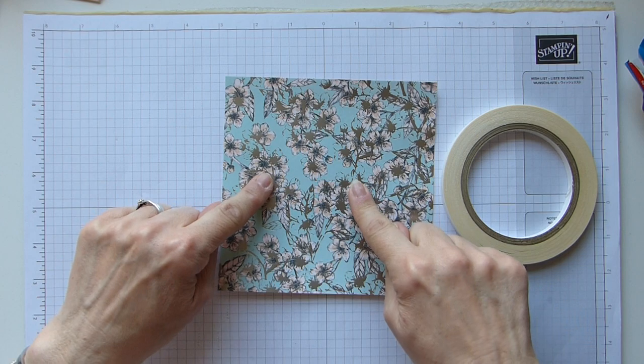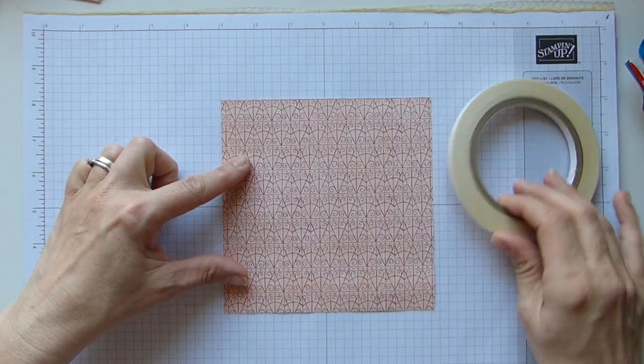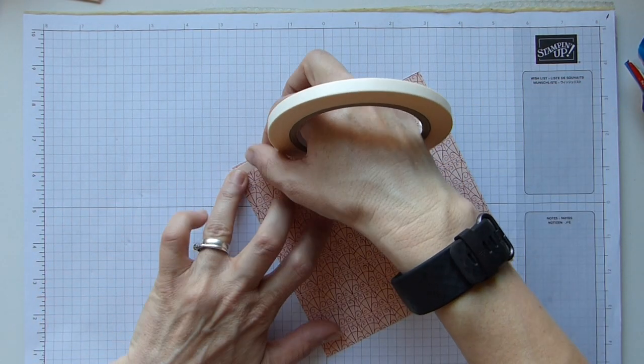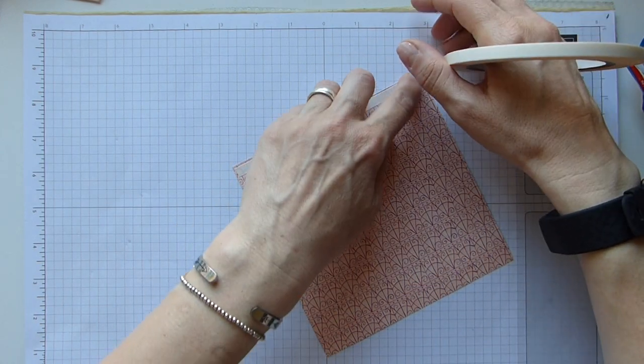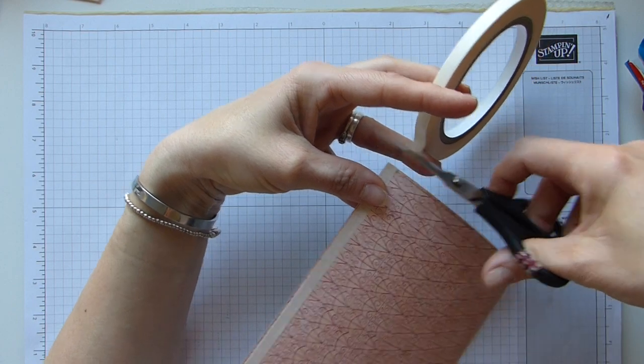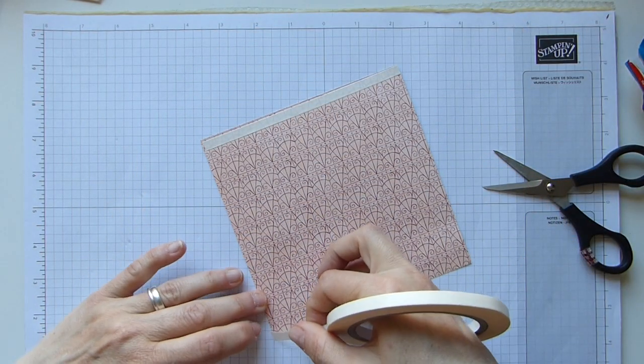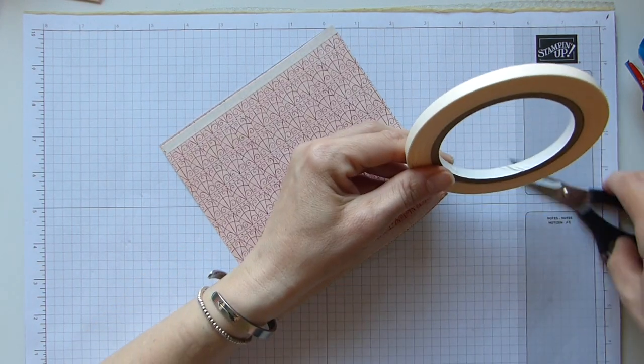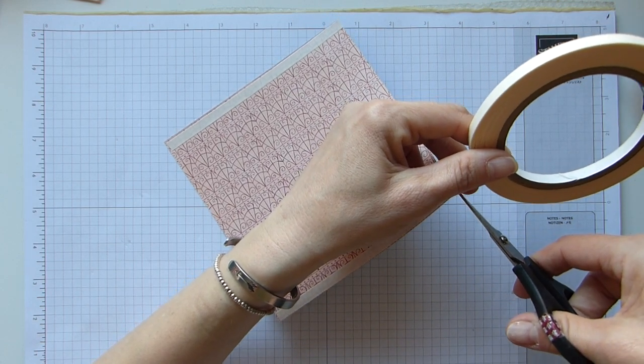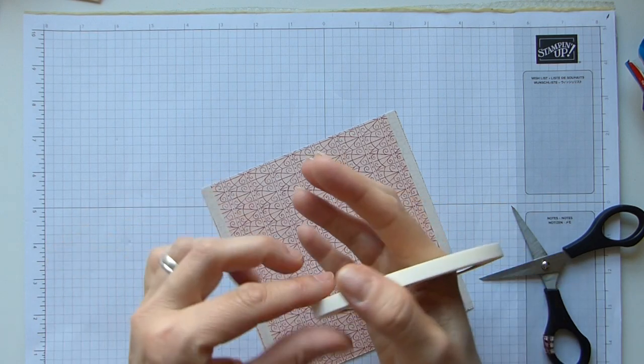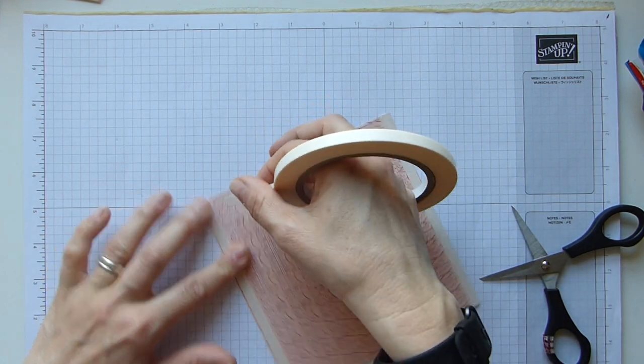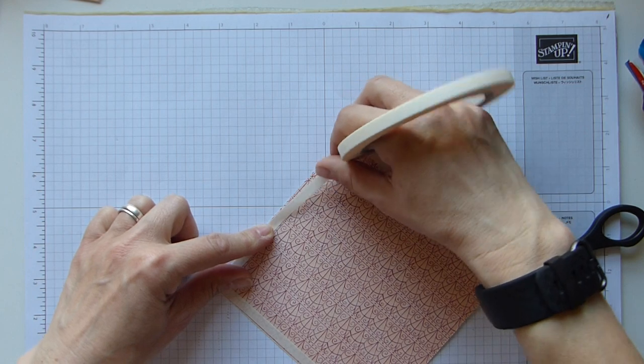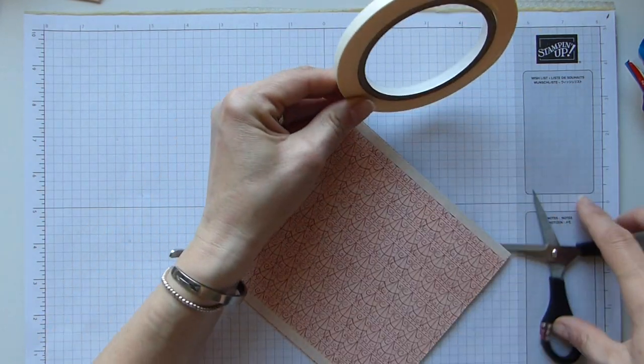If you have a pattern that you want to go a certain way, you'll need to pay attention to which way you do this. This is the side I want showing. On the opposite side, I'm going to pop some tear and tape all the way along the edge, going as close to the edge as I can, and then down the third side.